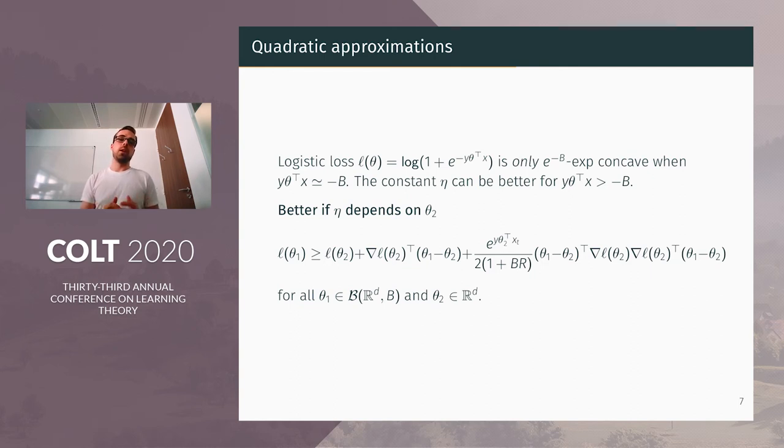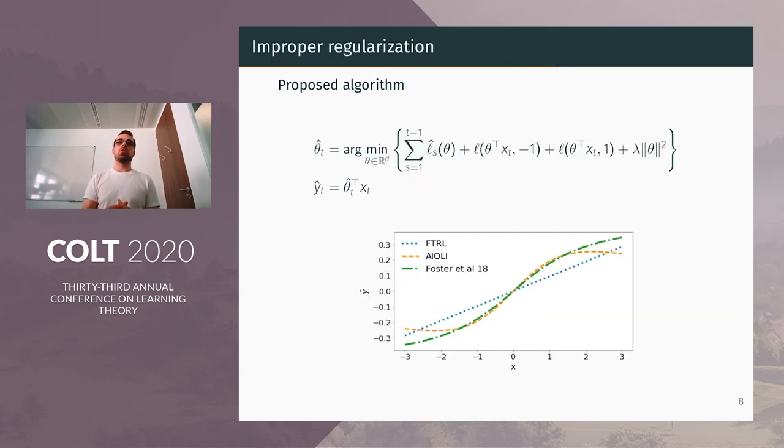Because in the worst case the η value is close to exponential minus B, this idea alone is not enough to remove exponential multiplicative constants. This is why we use a second idea, which we call improper regularization. So now we can state the proposed algorithm.